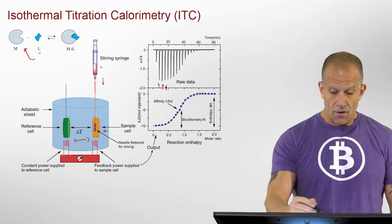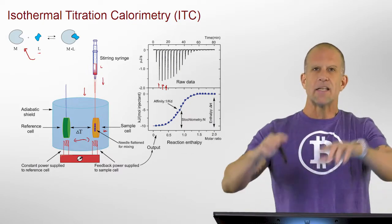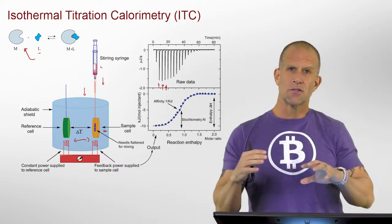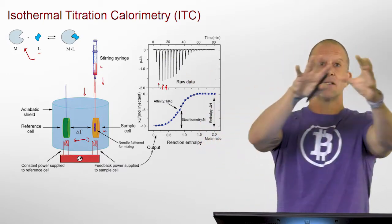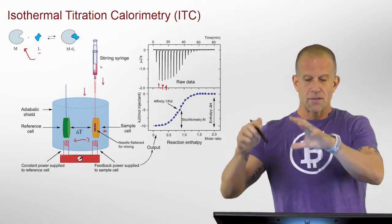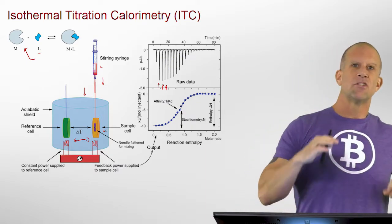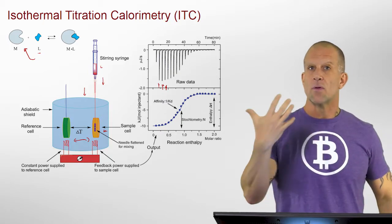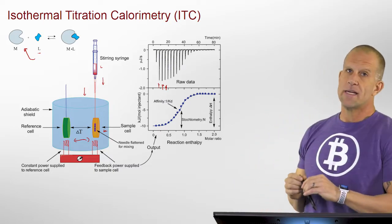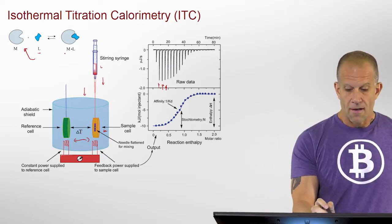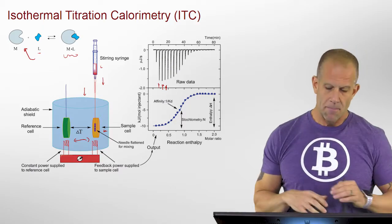ITC is performed under constant pressure conditions, so the heat involved is related to enthalpy. But because it's also done at constant temperature, it's related to the change in free energy or the equilibrium constant. Fitting the ITC data gives you directly something about the Gibbs free energy or equilibrium constant for this non-covalent metal-ligand interaction, which is very useful in biological systems.